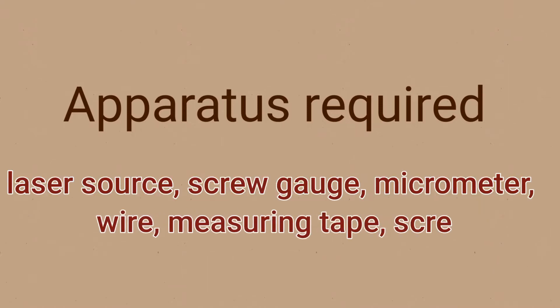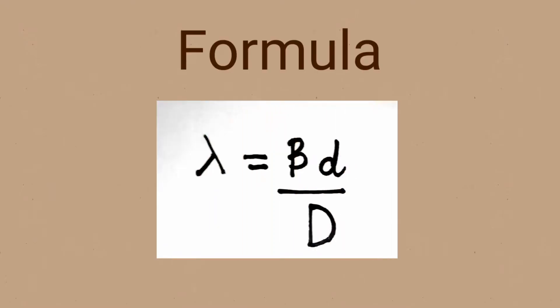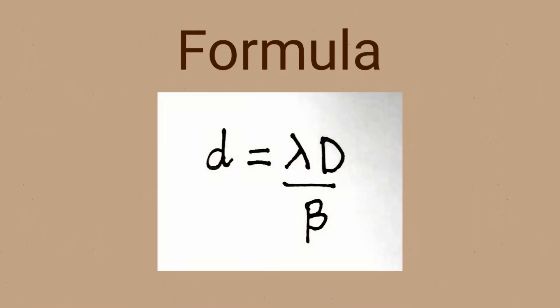The required apparatus is: laser source, screw gauge, micrometer, wire, measuring tape, and screen. The formula is lambda equals beta times small d upon capital D. Since we need to find the diameter, small d can be written as lambda D upon beta, where beta is the fringe width, small d is the thickness or diameter of the wire, and capital D is the distance between the wire and the screen.